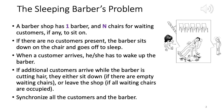If the barber is cutting hair and additional customers arrive, they either sit down if there are empty waiting chairs, or leave the shop if all waiting chairs are occupied. So the barber shop can be full — someone getting a haircut and all waiting chairs occupied. In that case any additional customer just leaves. We need to synchronize all the customers and the single barber. When one customer is done, the barber calls the next one in the queue, and this goes on until all customers are exhausted and the barber goes to sleep.